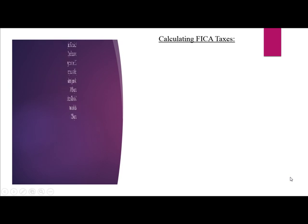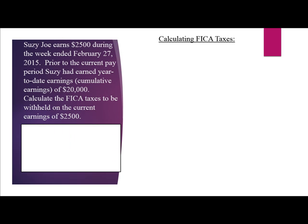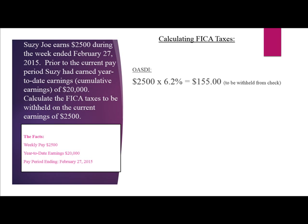Another example of calculating FICA taxes. Susie Jo earns $2,500 during the week ended February 27, 2015. Prior to the current pay period, Susie had earned year-to-date earnings of $20,000. The facts: weekly pay $2,500, year-to-date earnings $20,000, pay period ending February 27, 2015. For OASDI: $2,500 multiplied by 6.2% equals $155 to be withheld from the employee paycheck.